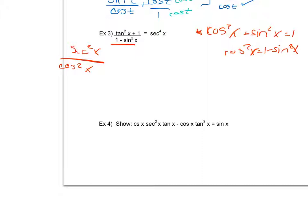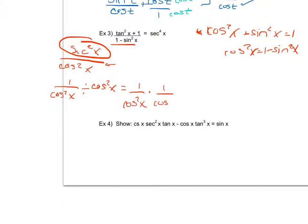Writing secant squared x in terms of sines and cosines gives one over cosine squared x. The fraction bar means I'm dividing by cosine squared x. To divide fractions, I leave the first fraction alone, change divide to multiply, and take the reciprocal of the second. Multiplying straight across gives cosine to the fourth x in the numerator. By the definition of the reciprocal function secant, one over cosine to the fourth x is secant to the fourth x. So I've successfully shown the left and right sides are equivalent.